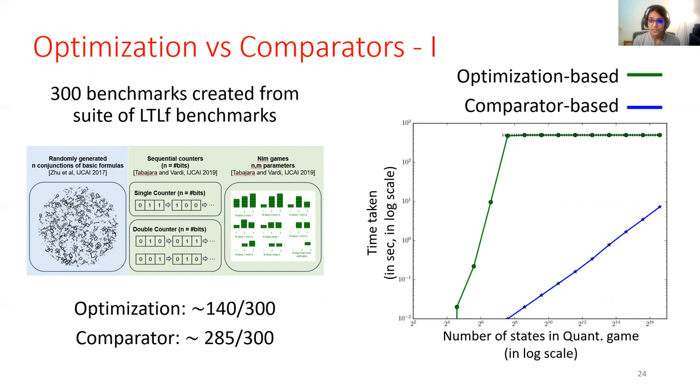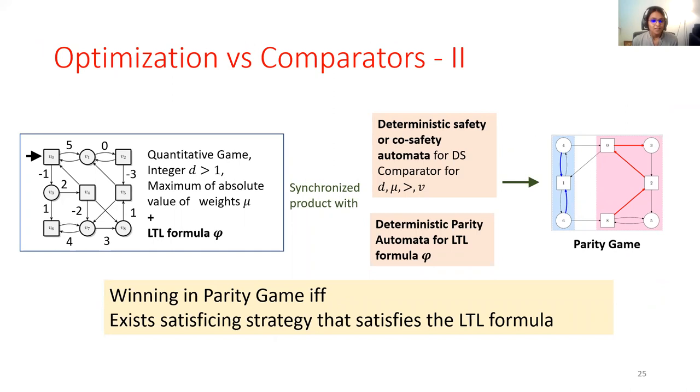And coming to the last point of how do we combine LTL objectives with satisficing? And you may have already guessed the answer. It is to take another synchronized product with a parity automaton corresponding to the LTL formula. And in this case, we get a sound and complete algorithm that combines both satisficing goals with LTL formulas.